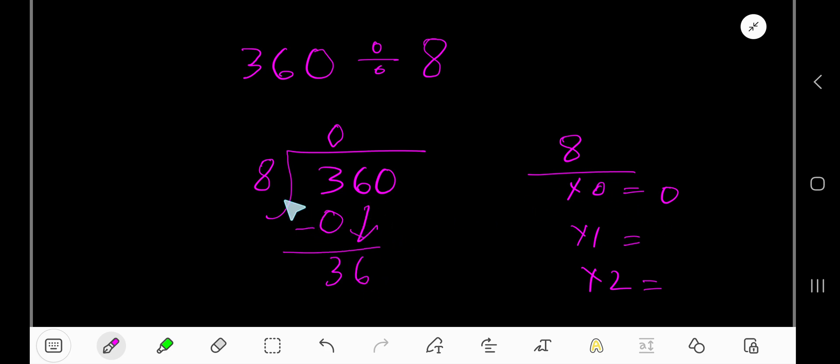Look, 8 goes into 36 how many times? Let me give you some hints. 8 times 0 is 0. 8 times 1, just add 8 to the previous step, you'll get 8. Then 8 times 2, add 8 to the previous step, so 16. If you continue this process, it will be helpful for you to find the answer.